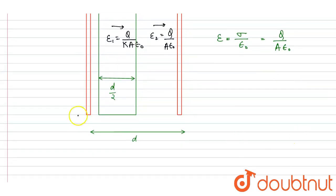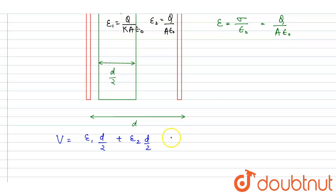So if I calculate the potential difference as we go from one plate to another plate, I will write that the potential difference is equals to E1 times d/2 plus E2 times d/2, since the electric field exists for d/2 distance in each region.